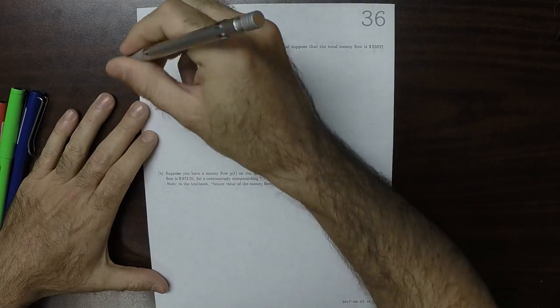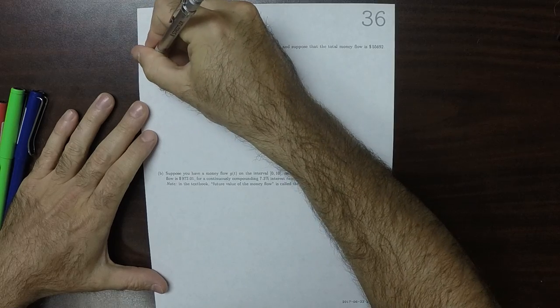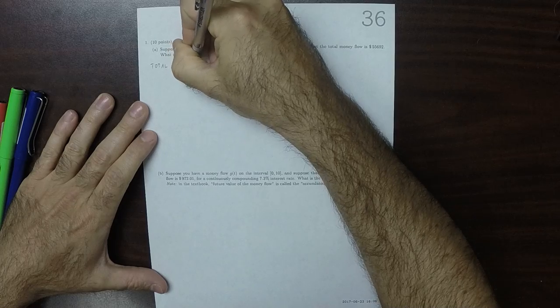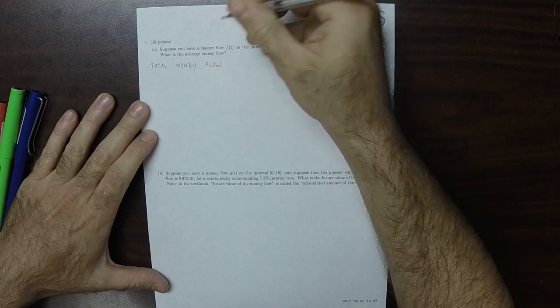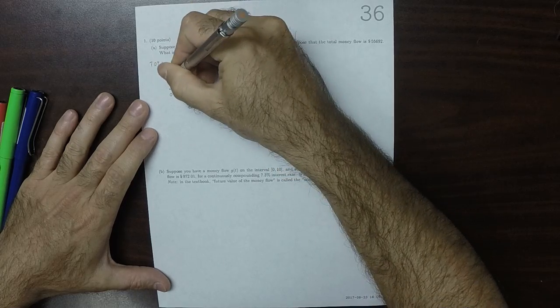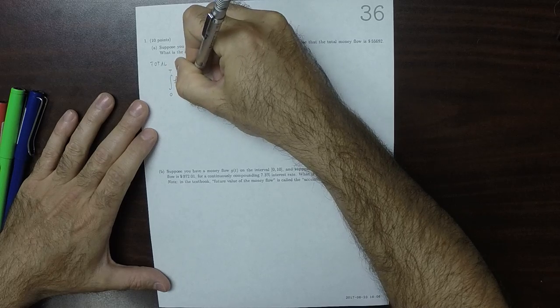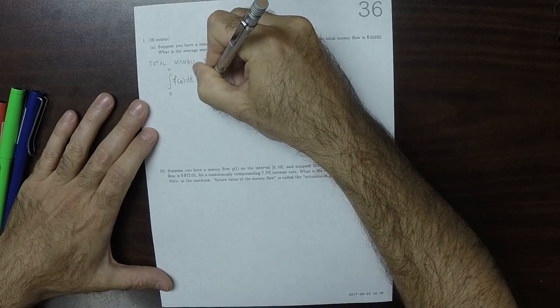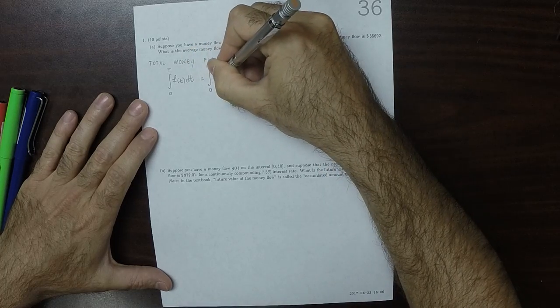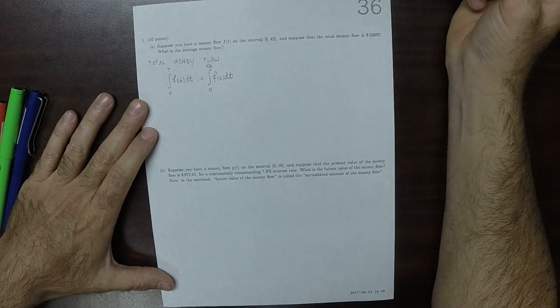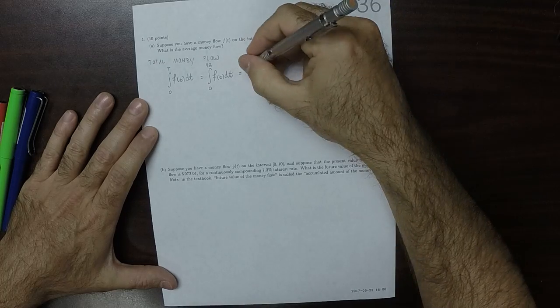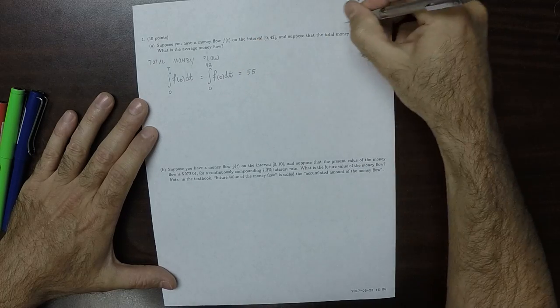This requires that you recall two things. So the total money flow, the formula for it is integral 0 to big T f of little t d little t, which on this exercise is integral 0 to 42 f of little t d t. And we're told that the amount is 5,5692.